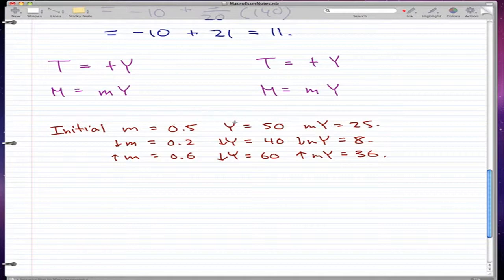For example, m is equal to 0.5, y is equal to 50, and if we times them together we get 25. Now it makes sense...